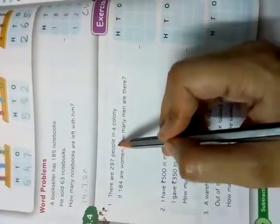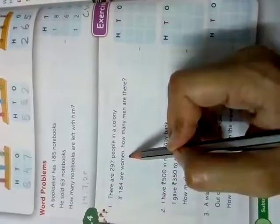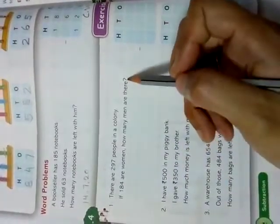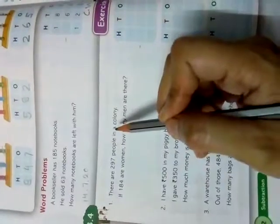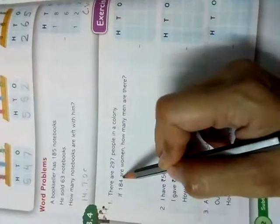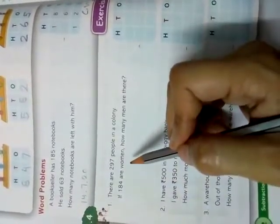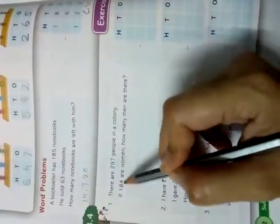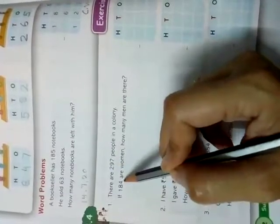Mention today's date. 14, 7, 20. Mention CW. Let us do some word problem. It's a story. Let's enjoy. Number 1. There are 297 people in a colony. If 184 are women. How many men are there? Students. People means both women and men. So, in a colony. Total number of people are 297. And women are given. But not men.